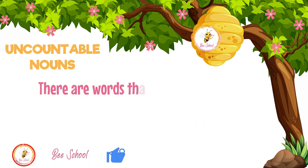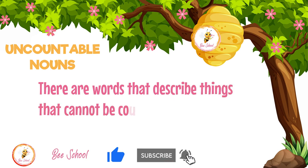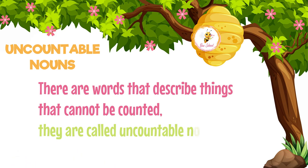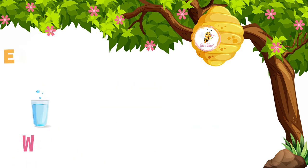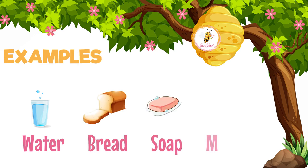Now let us see what are uncountable nouns. The uncountable nouns are the nouns that cannot be counted. Water, bread, soup, money. These nouns do not have a number in front of them.